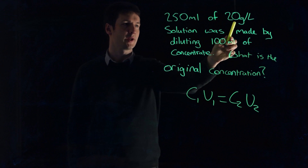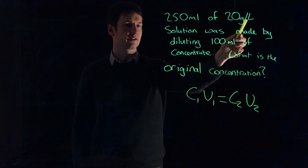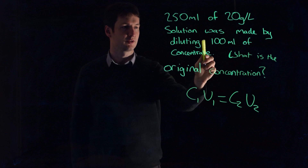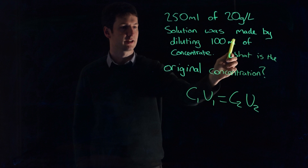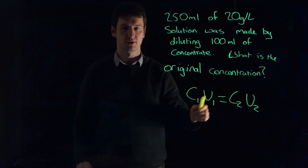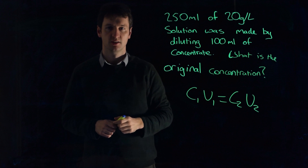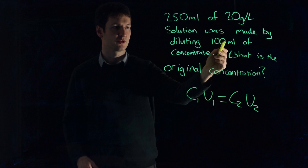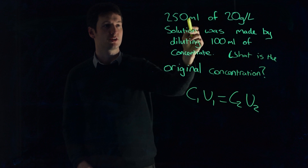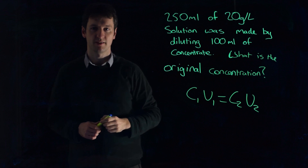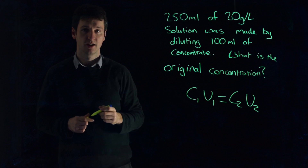250 milliliters of a 20 grams per liter solution was made by diluting 100 milliliters of concentrate. What was the original concentration? So what is the concentration of the 100 milliliters of solution that, if we dilute it to 250 milliliters, will have a concentration of 20 grams per liter?